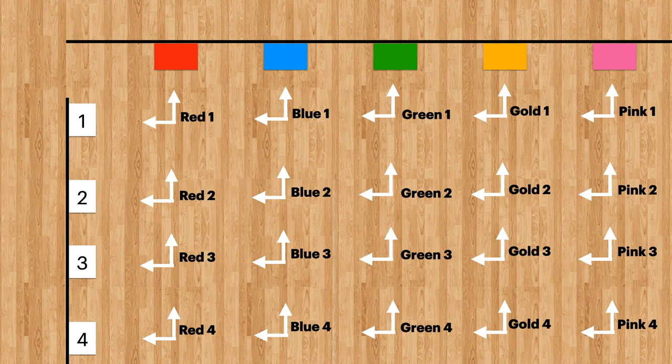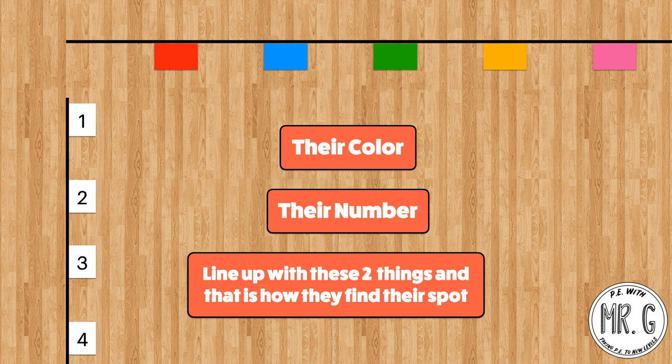Once you have your rows and columns created and taped up on the wall, you can begin to assign students a spot. All you have to do is combine one row and one column together — so for example: red one, blue one, green one, gold one, pink one, and so on. In this example you can easily create 20 spots for your students, and it requires no floor tape. For students, there are only two things they have to remember: their color and their number. I always tell my students to line one hand up with their color, line the other hand up with their number, draw an imaginary line, and where they come together is their assigned spot.